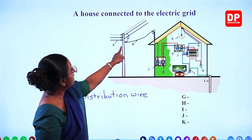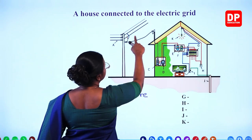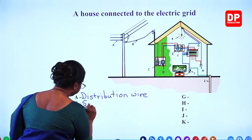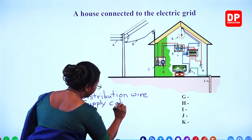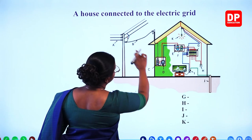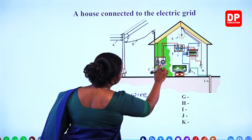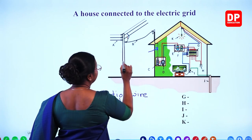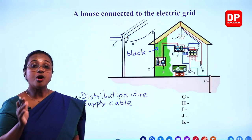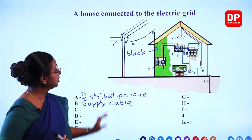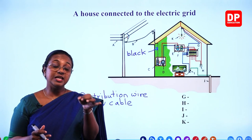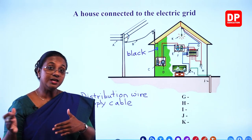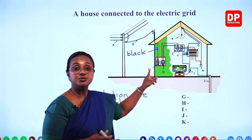From the distribution wire, there is a cable — component B — which is the main line from the distribution wire to the household. That is known as the supply cable. The supply cable is black in color and has a larger diameter compared to the normal conducting wires used inside the household. That is the cable that supplies electricity to the household.